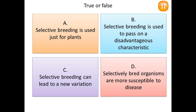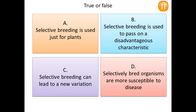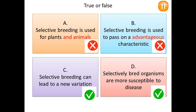Now a true or false task — go through each of the four statements and tell whether it is true or false. First: selective breeding is used just for plants — this is false; we said it's used for animals and plants. Second: selective breeding is used to pass on a disadvantageous characteristic — false, it's the advantageous characteristic you select. Third: selective breeding can lead to new variation — true, that's one of the pros. Fourth: selectively bred organisms are more susceptible to disease — true, that's one of the cons.